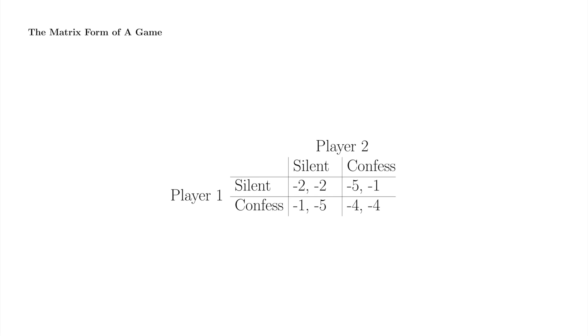However, if you're both silent, the police will have enough evidence to convict you both only on minor charges and you'll each be sent away for just two years. If you both confess, they will cut you a deal, but since you both confess, they have enough evidence to send you both away for four years.